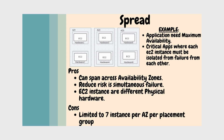Each EC2 instance has its own hardware — if that hardware goes down, only that particular EC2 instance fails. The other EC2 instances running on different hardware won't be affected. However, Spread is limited to only seven EC2 instances per availability zone per placement group. The use case: when your application is critical and must not go down at any point, use Spread — where each EC2 instance must be isolated from the failure of others.